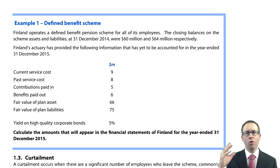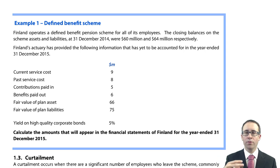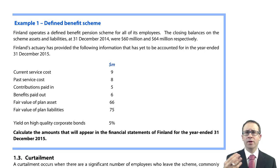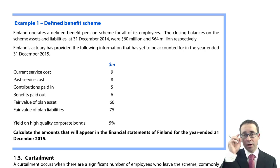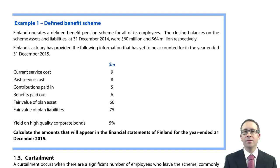This example is more likely to be used by the examiner and feeds into question number one within group accounts. It's likely that the parent has a defined benefit scheme and you need to account for that defined benefit scheme with the numbers in the parent's books. We'll work it through and show how it fits into a group's question. It's unlikely you would see something like this within question number two or question number three.